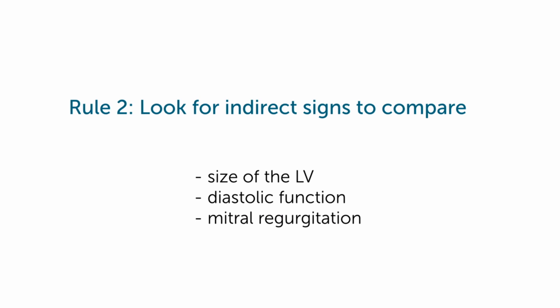The second rule: look for indirect signs that you can compare. The left ventricle size is one of these parameters that are very important. Look for diastolic function — in other words, whether or not a patient reverted from a restrictive filling pattern maybe to a pseudonormal or even to an impaired relaxation — as an indication that his filling pressures are dropping.